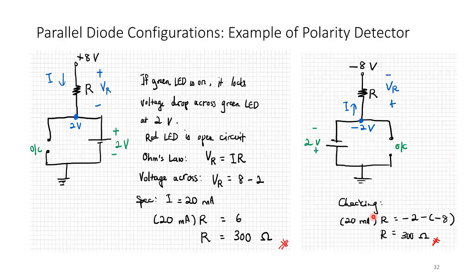Checking in the opposite direction: if current flows through the red LED, that node is at negative 2 volts. The voltage across R is then minus 2 minus negative 8 equals 6 volts positive. Applying Ohm's law: 6 equals 20 milliamps times R, giving R equals 300 ohms. Both directions confirmed.